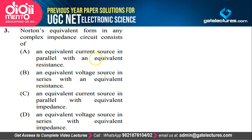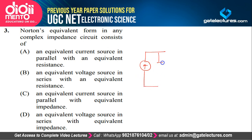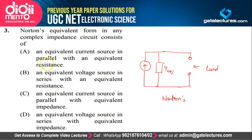Now look at the next question. Norton's equivalent form in any complex impedance circuit consists of: A) equivalent current source with equivalent resistance, B) equivalent voltage source in series with equivalent resistance, C) equivalent current source in parallel with equivalent impedance, or D) equivalent voltage source in series with equivalent impedance. In Norton's theorem, all circuit sources — current sources and voltage sources — are simplified as one singular equivalent current source in parallel with an equivalent impedance, and between those points you apply the load. So the correct answer is option C.